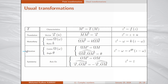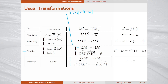Now consider a rotation with center Ω (with affix ω) and angle θ. Such a rotation is characterized by: the distance |ΩM'| equals |ΩM|, and the angle between ΩM and ΩM prime equals θ. This leads to: |z prime - ω| = |z - ω| and arg((z prime - ω)/(z - ω)) = θ.